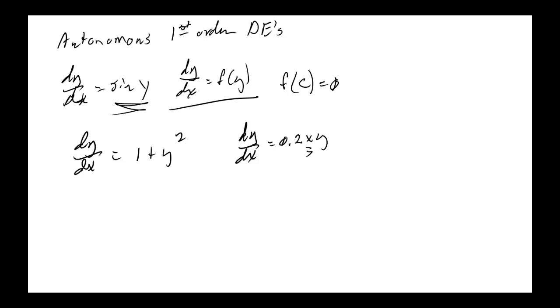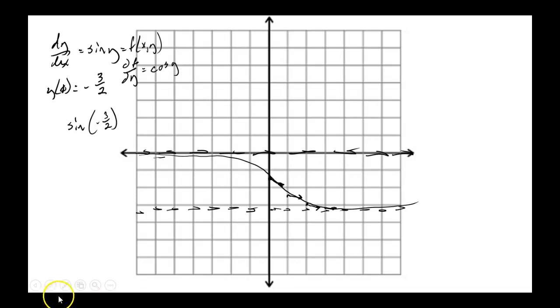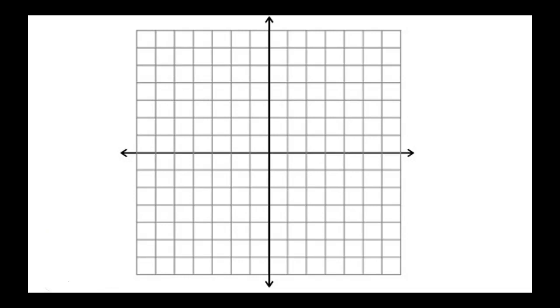Let's move to Example 3. Here's your differential equation: dp/dt equals p times (a minus bp), where a and b are both positive constants. That's autonomous because we can write it as f(p). Now, where would f(p) equal 0? One critical point is at p equals 0.